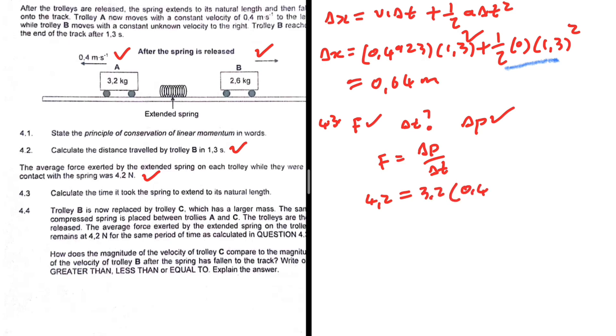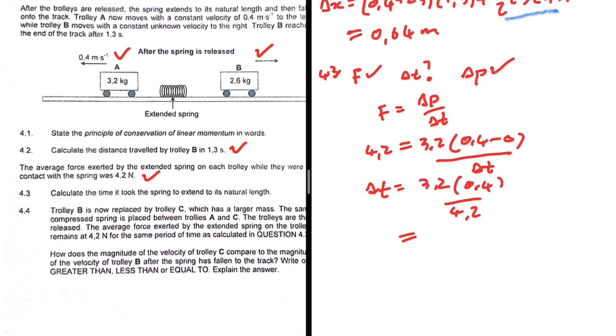So the mass of object A, that is 3.2, final velocity is 0.4, and the initial is zero, right, when the spring is still—what we call this—when the spring is yet to be released, right, coiled up. Anyway, and then we divide this by delta t. So delta t should be equals to 3.2 multiplied by 0.4 divided by 4.2. Let me go ahead and put that in my calculator. So 3.2, well we have a 0.4, divided by 4.2. What's happening? What do I get? 0.3. So there we go, it takes 0.3 seconds for this spring to extend to its natural length.